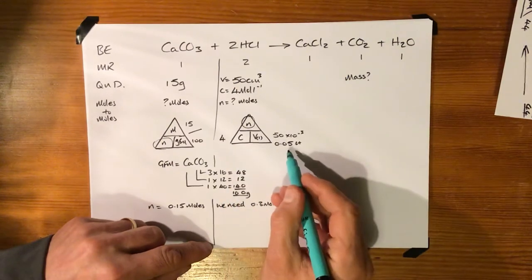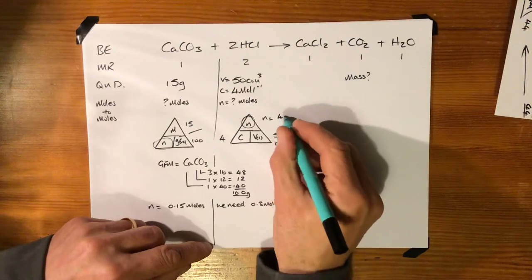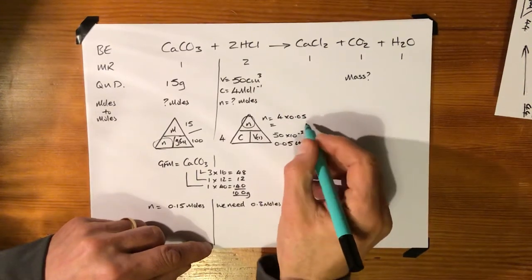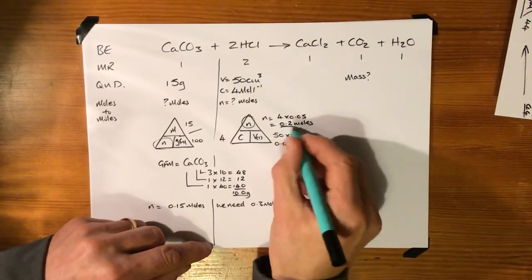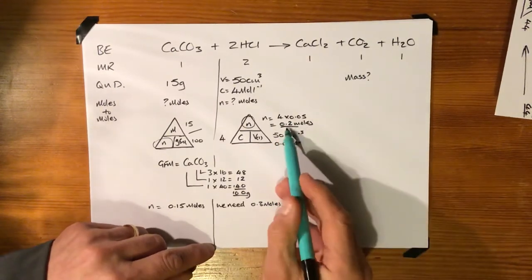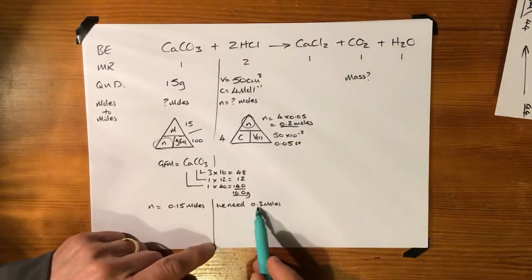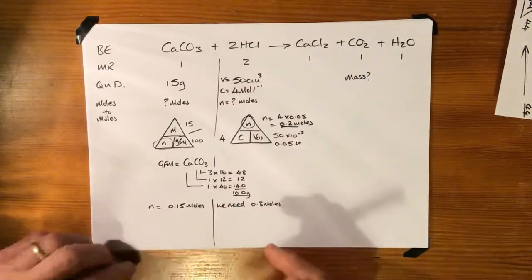N equals four times 0.05. N equals 0.2 moles. So we've got 0.2 moles, we need 0.3 moles. So we don't have enough of this guy. This is in excess.